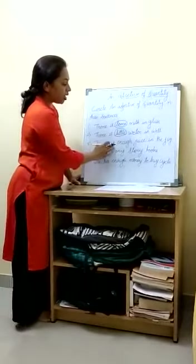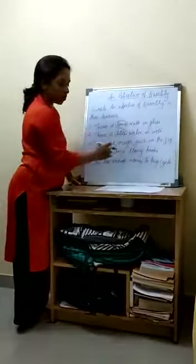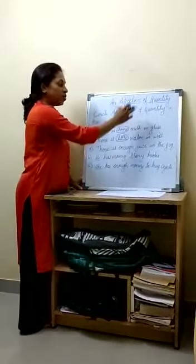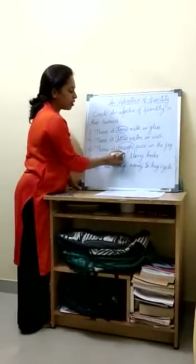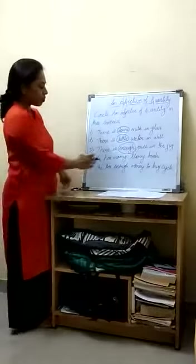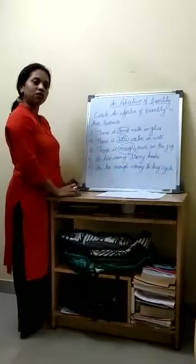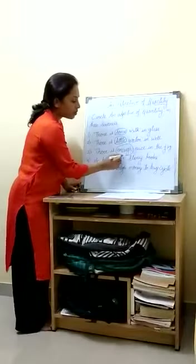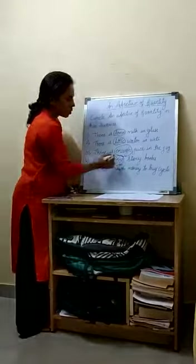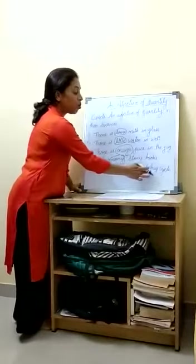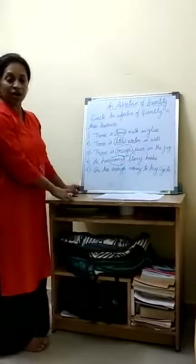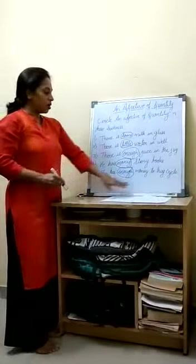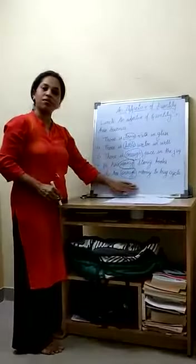Move to the next sentence: there is enough juice in the jug. Enough is an adjective of quantity. Next: he has many story books — many is an adjective of quantity. Next: she has enough money to buy a cycle. Enough is an adjective of quantity in this sentence.